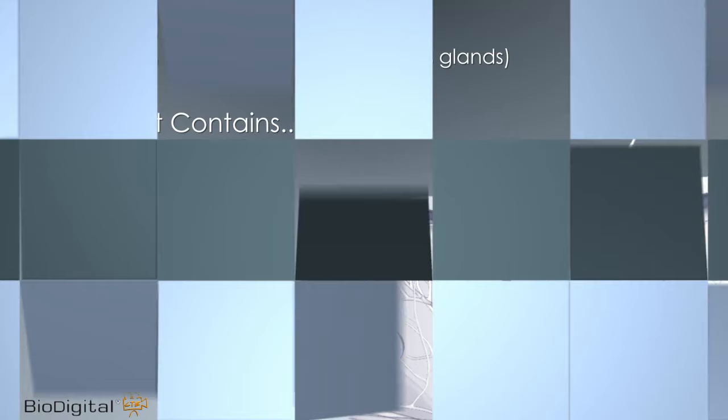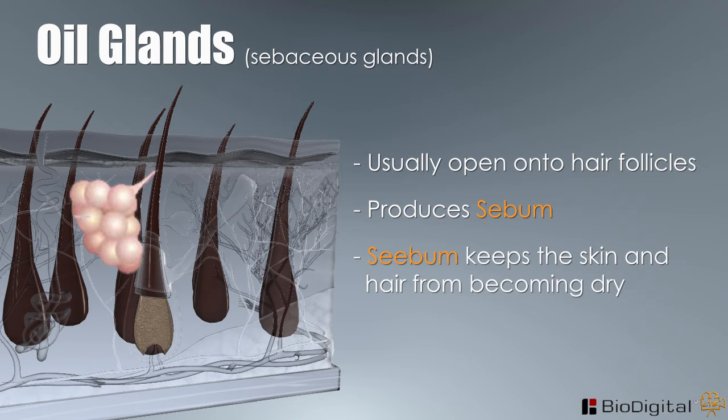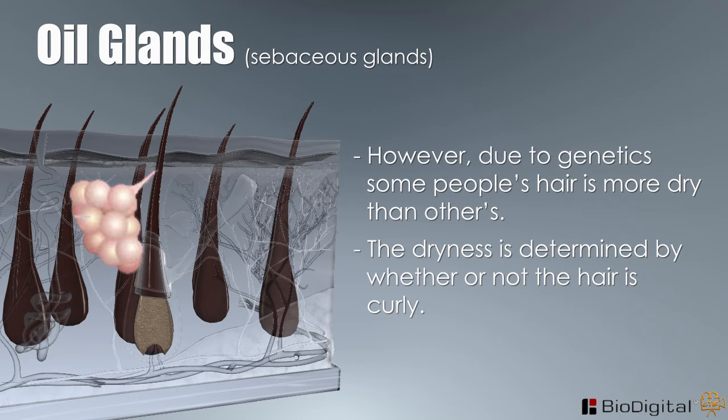Oil, or sebaceous glands, usually open onto hair follicles. These glands produce sebum, an oil that keeps the skin and hair from becoming dry. However, due to genetics, some people's hair is more dry than others. The dryness is determined by whether or not the hair is curly — the curlier the hair, the drier the hair, even when the amount of sebum produced is the same.